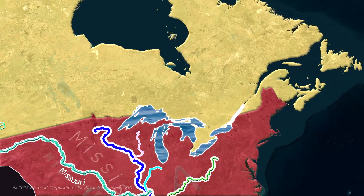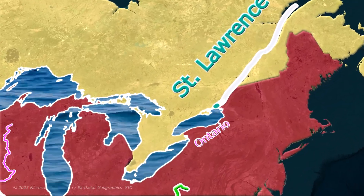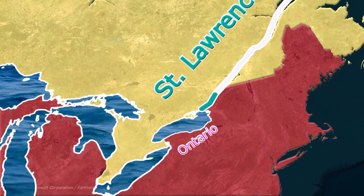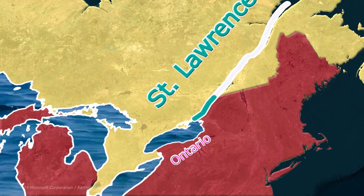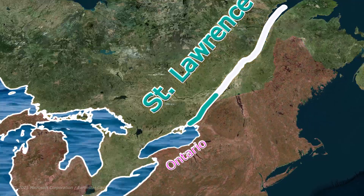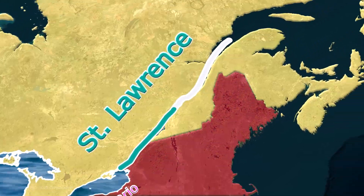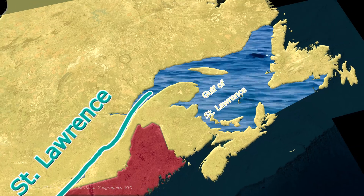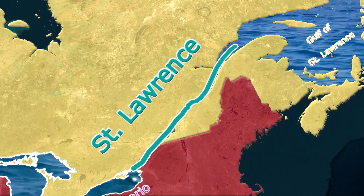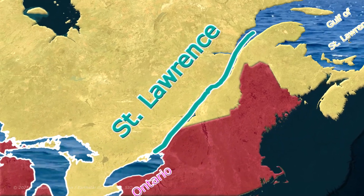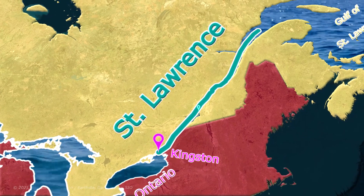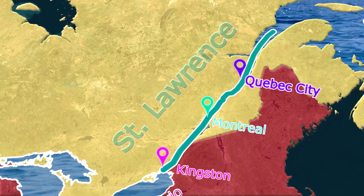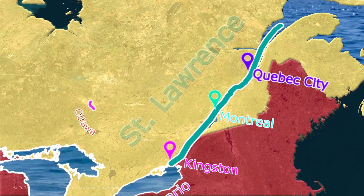Now let us learn about the St. Lawrence River. It originates from Lake Ontario, flows along the boundary of the United States and Canada, and finally empties into the Gulf of St. Lawrence. Famous cities — Kingston, Montreal, and Quebec City — are located on its bank.